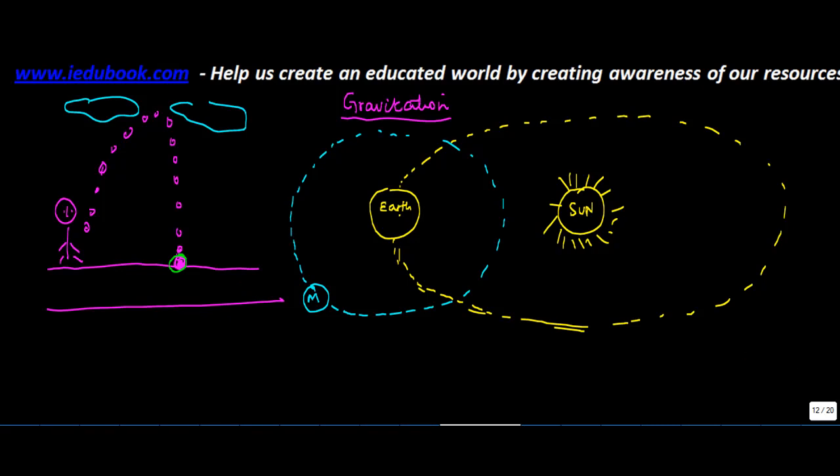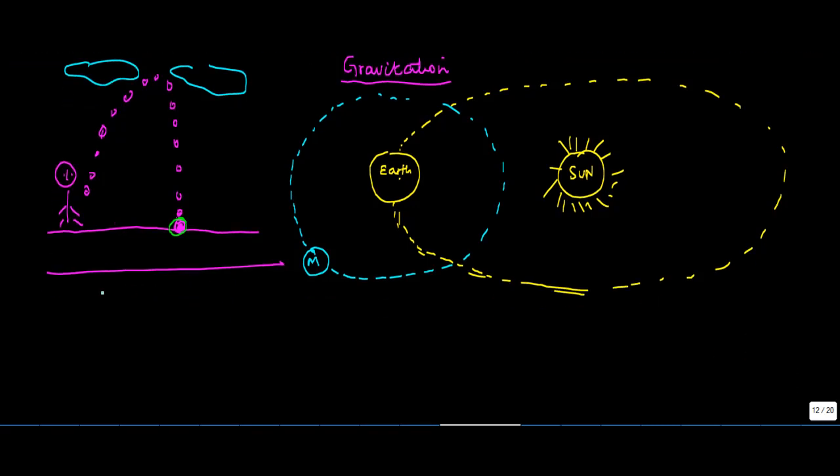This law was initially identified by Mr. Isaac Newton. So what happened was that Mr. Newton one day was sitting on the earth, and suddenly what he noticed was that an apple fell from the tree and it came down.